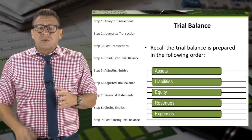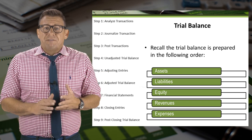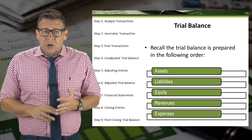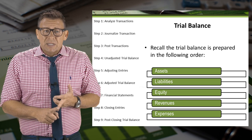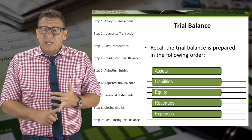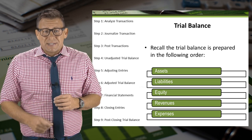The trial balance lists accounts in the following order: assets, liabilities, equity, revenues, and expenses.